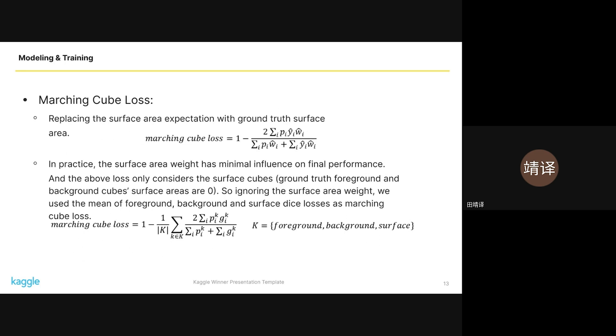By replacing mean surface area expectation with ground truth area, we can have a Marching Cube loss. But in practice, we found that the surface area weight had minimal impact on our final model's performance, and it only considers the surface cubes because ground truth foreground and background cube surface area are zero. Ignoring the surface area weight, we used the mean of foreground, background, and surface dice losses as the final Marching Cube loss.